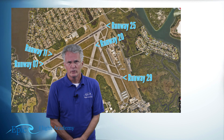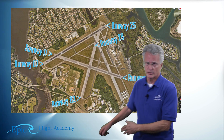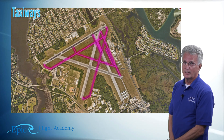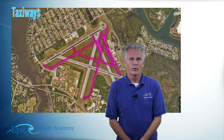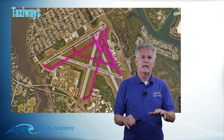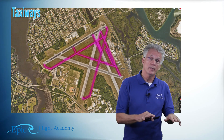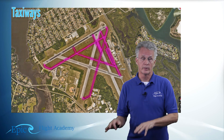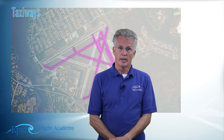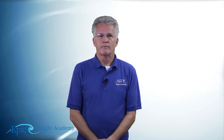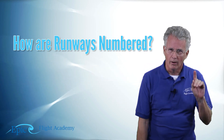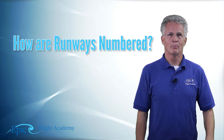Notice in the diagrams and pictures these runways are connected by taxiways. Taxiways refer to aircraft movement on the ground between runways, or between the runway and your home base or the FBO. Here's a review question for this segment of the lesson: how are runways numbered?